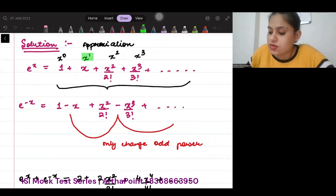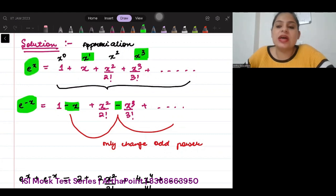So, here where I have this odd power, this will become minus x. Here, where I have an odd power, this will become minus and so on. So, this will be the formula of e to the power minus x. So, we have got e to the power x and we have got e to the power minus x.